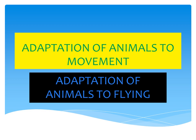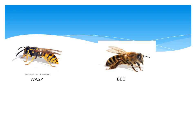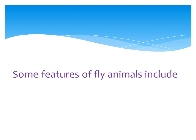Number one: adaptation of animals to flying. Animals that fly include birds like the eagle and sunbird, winged insects like the butterfly and bee, and bats — they are called flying mammals because they fly most of their lifetime. Flying animals include bats, the housefly, eagle, wasp, bee, moth, and the tsetse fly.